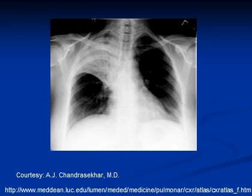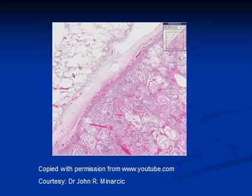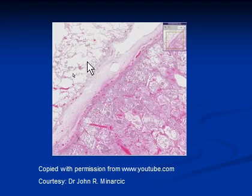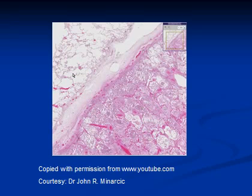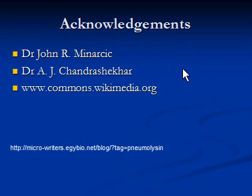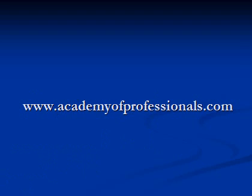A typical picture of lobar pneumonia, usually caused by Streptococcus pneumoniae. If you take a sample and put it under a microscope, it should look like this. This is the pleura, this is the normal lobe, and this is the infected lobe — the alveoli here are filled with air, as opposed to the infected region filled with fibrin and neutrophils in the initial stages, and more macrophages towards the end of the process. This lecture was prepared for academyofprofessionals.com. Thank you very much.